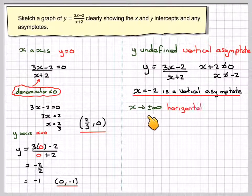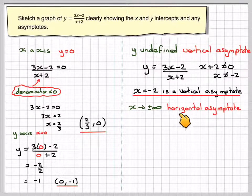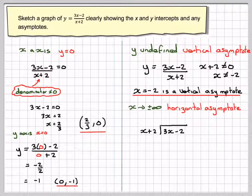As x goes to plus or minus infinity, or very large or very small, we have what's known as a horizontal asymptote. One way to do this is to do the division.